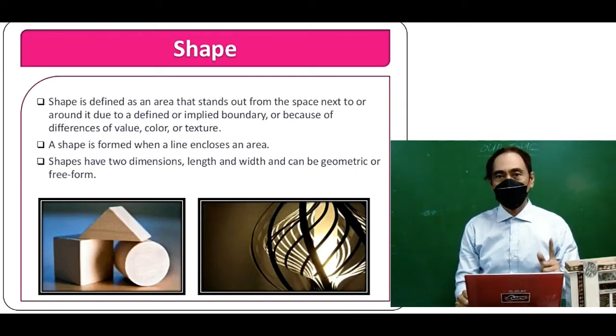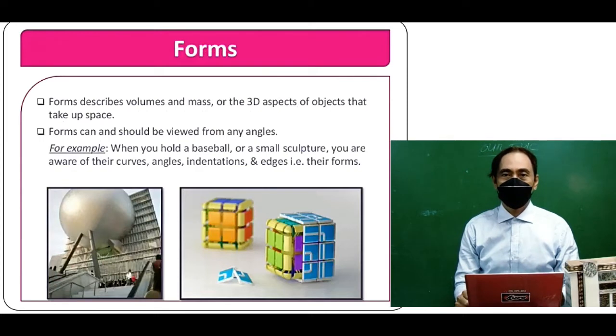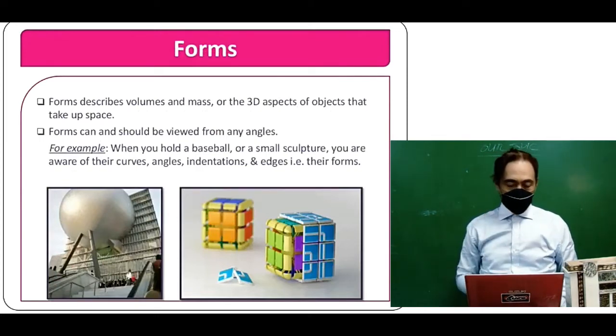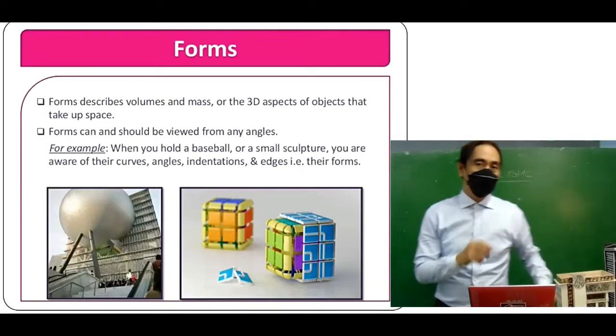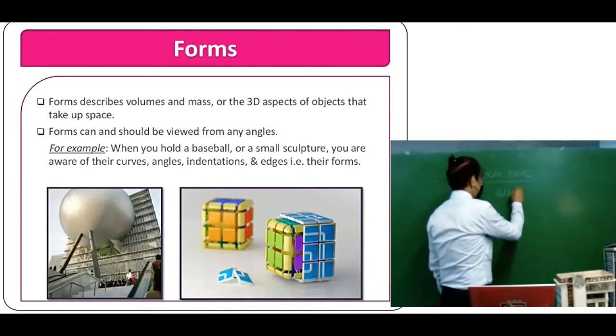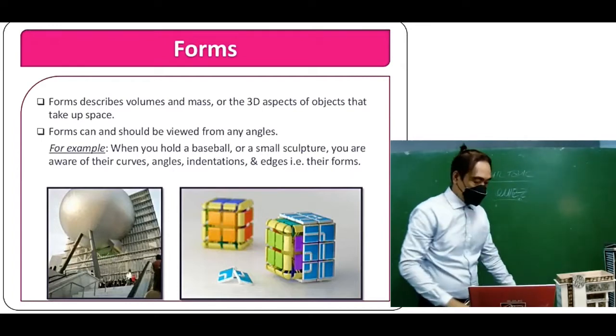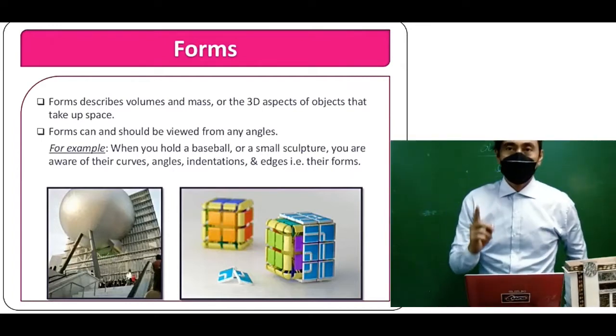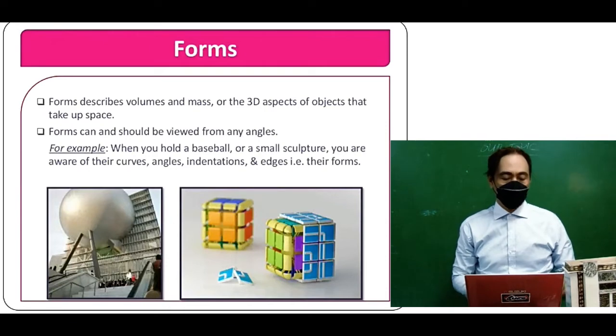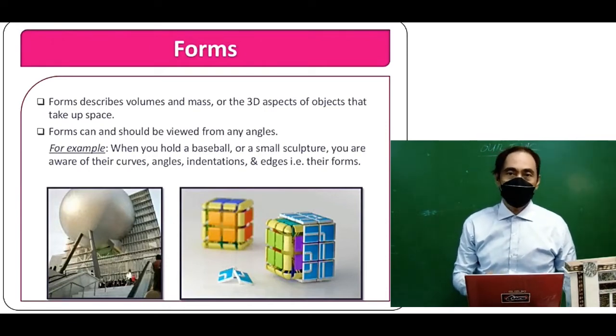Shapes are two-dimensional with length and width and can be geometric or freeform. Forms describe volumes and mass or the 3D aspects of objects that take up space. Form can and should be viewed from any angle. For example, when you hold a ball or baseball or a small sculpture, you are aware of their curves, angles, indentations, and edges.